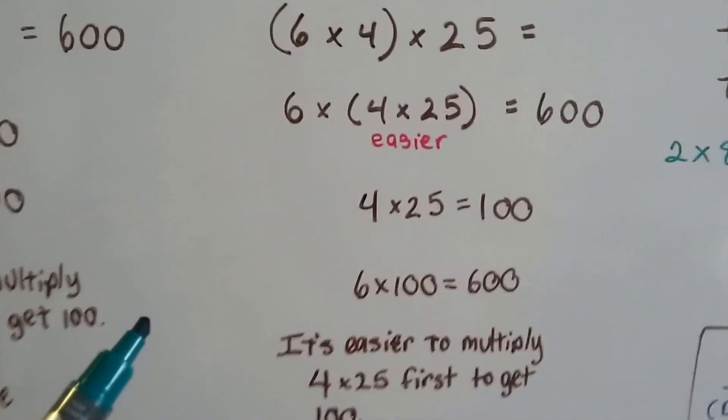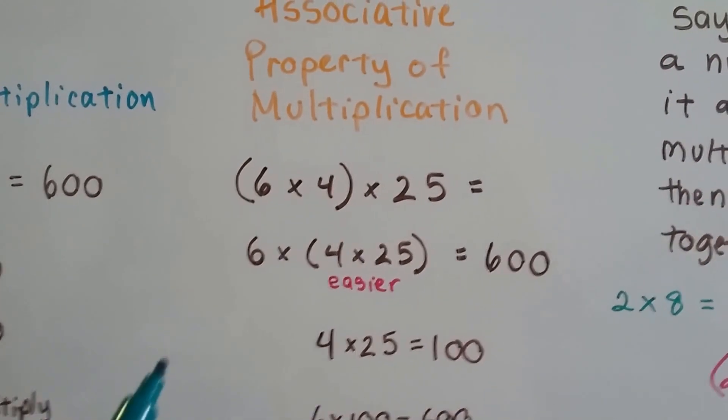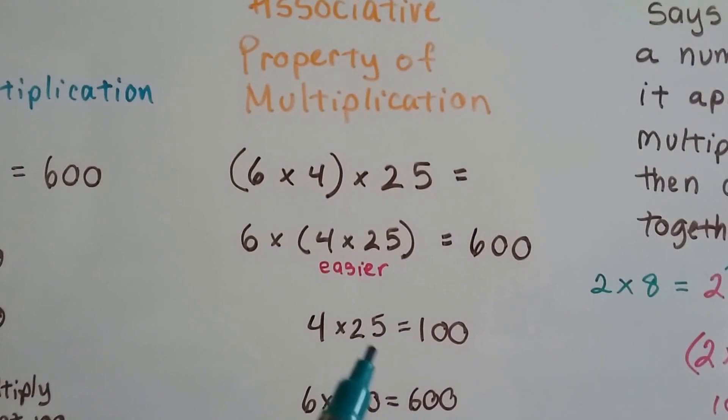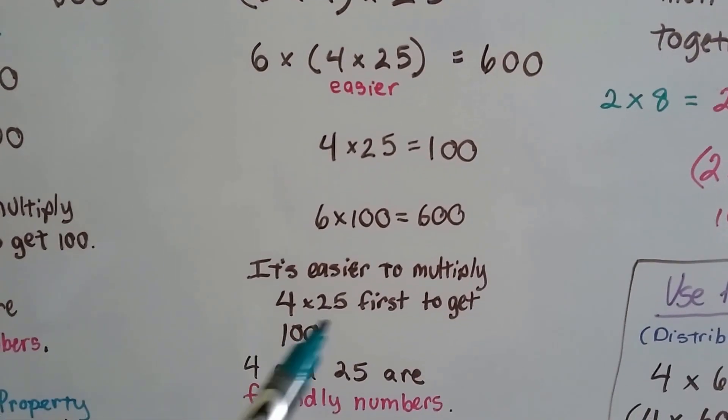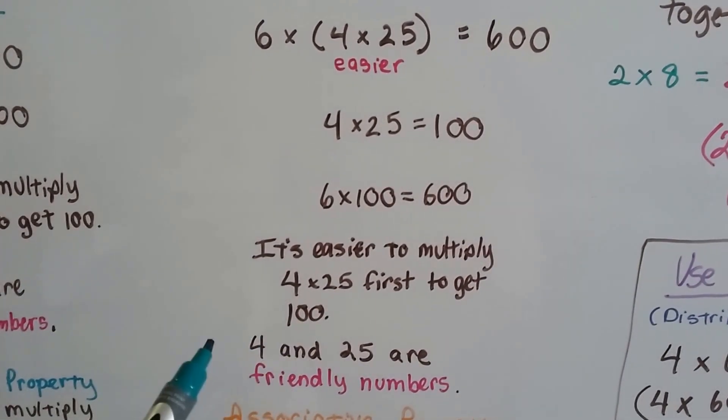So if we have 6 times 4 times 25, with the associative property, we can multiply 4 times 25 first because it's easier. We get 100, then multiply by 6 to get 600. 4 and 25 are friendly numbers.